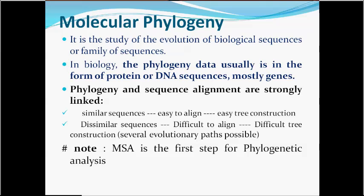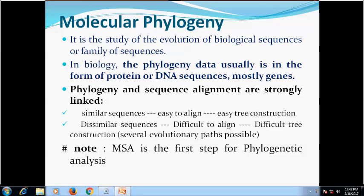Molecular phylogeny is the study of evolution of biological sequences or a family of sequences. In biology, phylogeny data is usually in the form of protein or DNA sequences, and mostly genes. Phylogeny and sequence alignment are strongly linked because two very similar sequences can be easily aligned, and similarly a group of similar sequences can easily be organized into a tree.